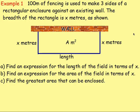Example one. There is 100 metres of fencing used to make three sides of a rectangular enclosure against an existing wall. The breadth of the rectangle is x metres as shown. Find: an expression for the length of the field in terms of x; an expression for the area of the field in terms of x; and the greatest area that can be enclosed.